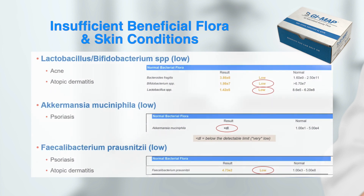Insufficient beneficial flora can also be associated with skin conditions. Low Lactobacillus or Bifidobacterium species have been linked with acne and atopic dermatitis. Low Akkermansia muciniphila has been linked with psoriasis. Low Faecalibacterium prausnitzii, a major butyrate-producing species, has been linked with psoriasis and atopic dermatitis.